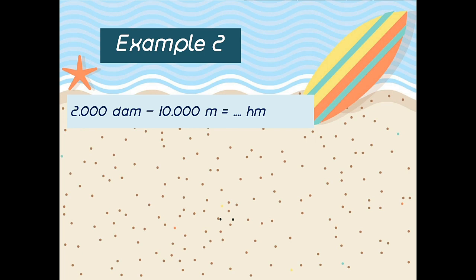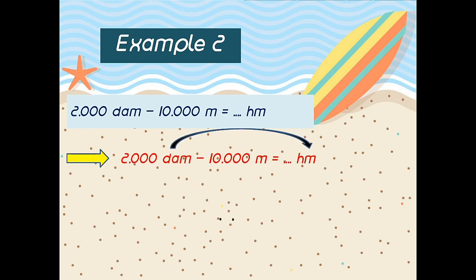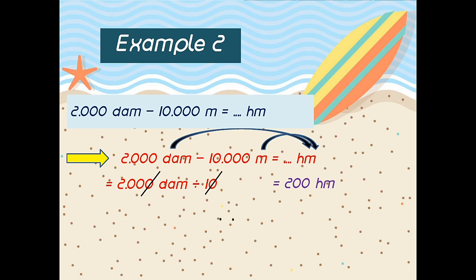2000 dekameter minus 10,000 meter is how many hektometer? The answer. First, from dekameter to hektometer — up or down? Good, up. How many steps? Yeah, one. So the answer: 2000 dekameter divide by 10 is 200 hektometer.